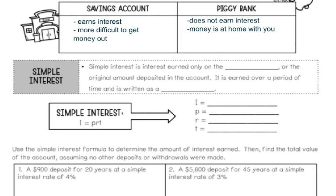Next, let's look at the definition for simple interest. Simple interest is interest earned only on the principal, or the original amount deposited in the account. It is earned over a period of time and is written as a percentage. To solve for simple interest, we're going to use a formula: I equals PRT.